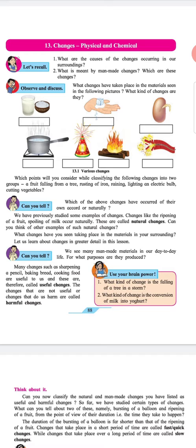We have previously studied some examples of changes, like ripening of a fruit and spoiling of milk. These are called natural changes. Can you think of other examples of such natural changes? What changes have you seen taking place in the materials in all your surroundings? Let us learn about changes in greater detail in this lesson.